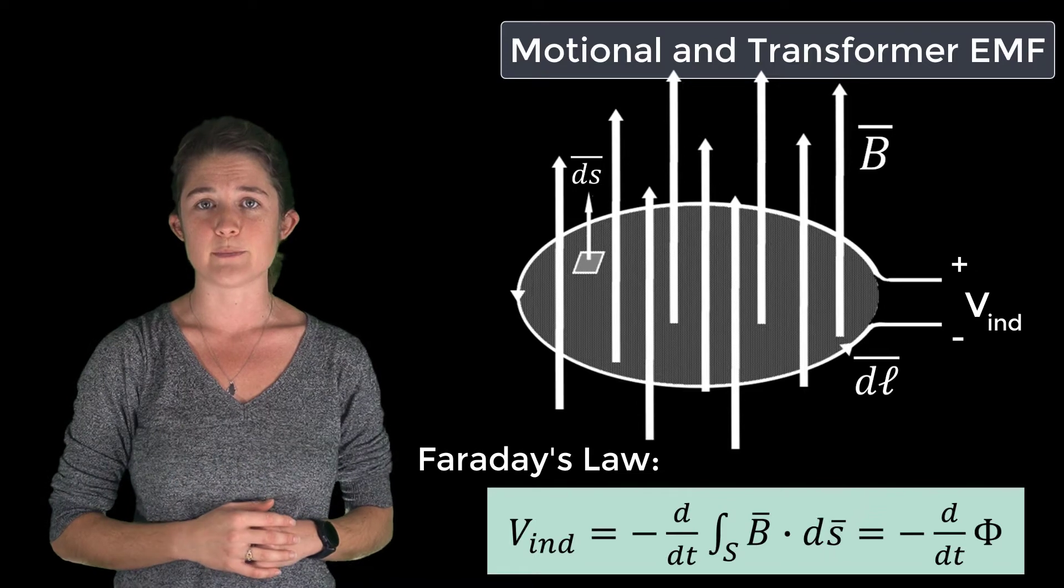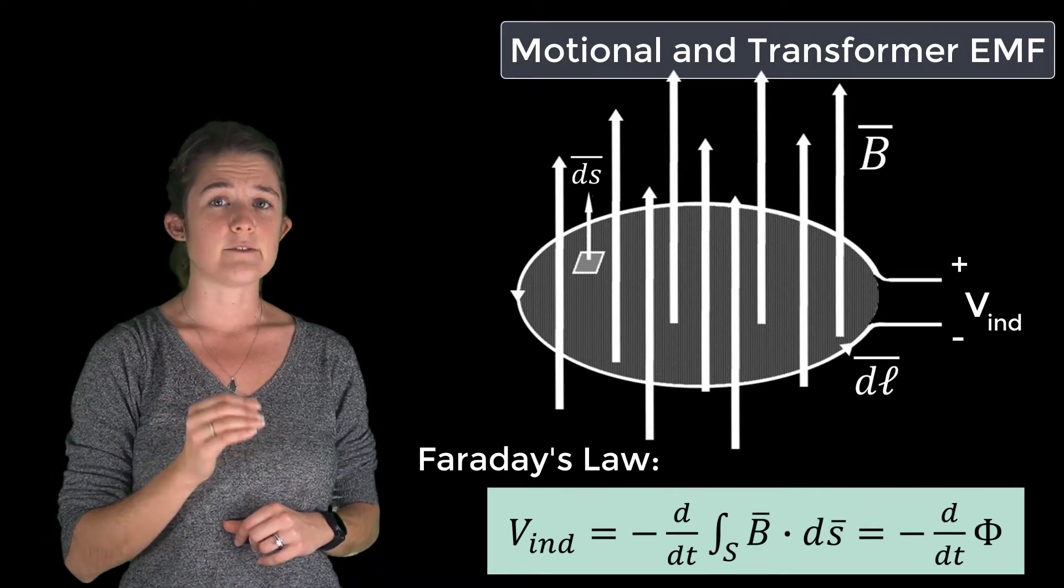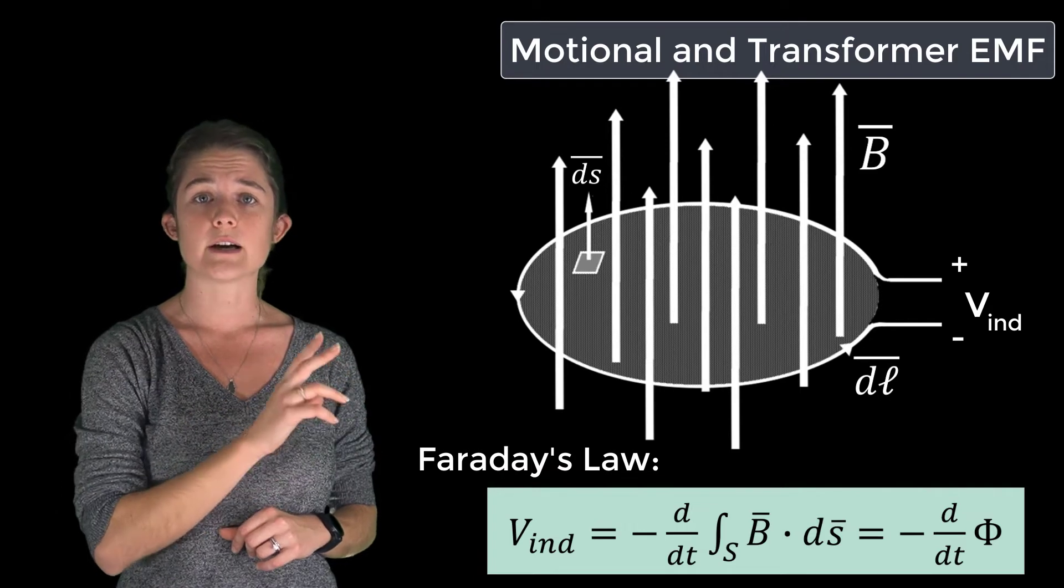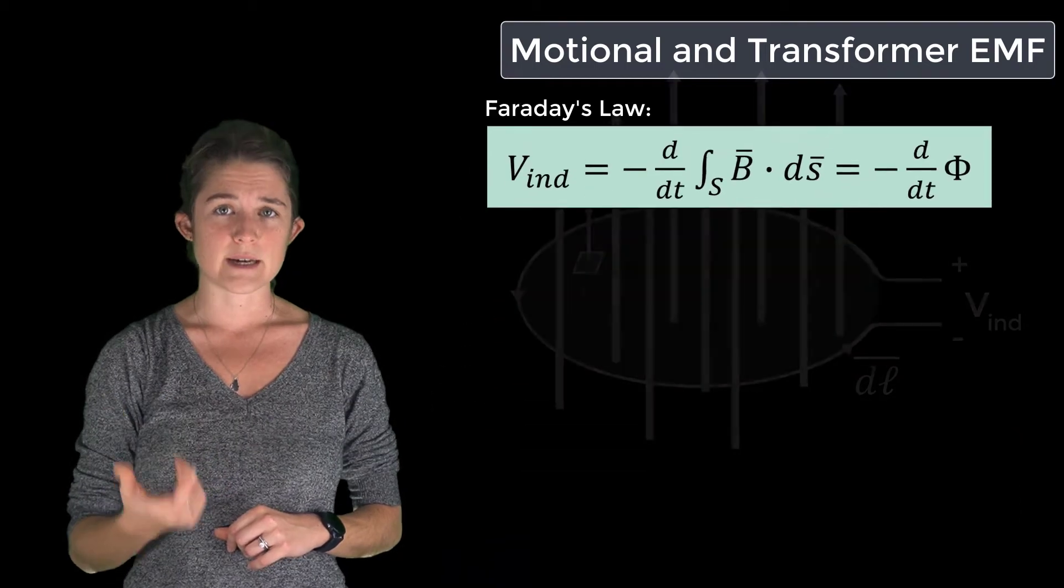integral over the surface of the loop of B dot ds. This may also be expressed as negative the time derivative of the total flux phi passing through the loop.